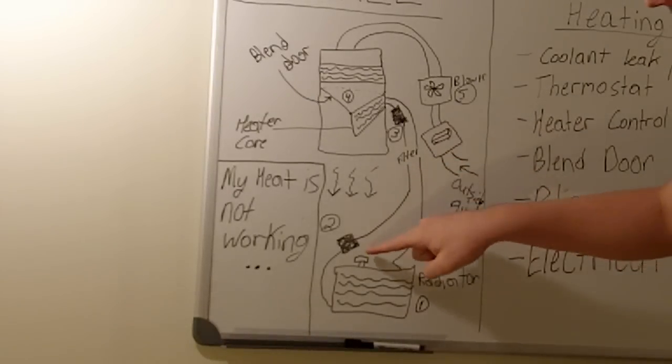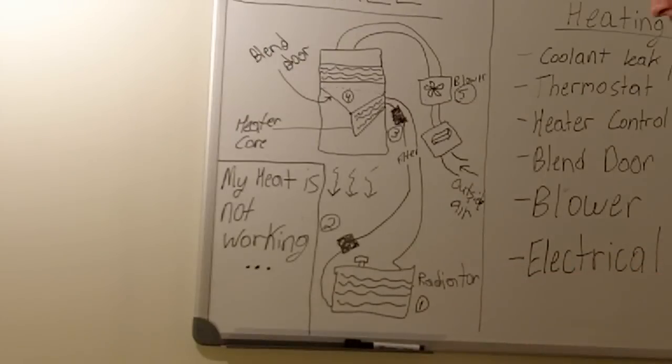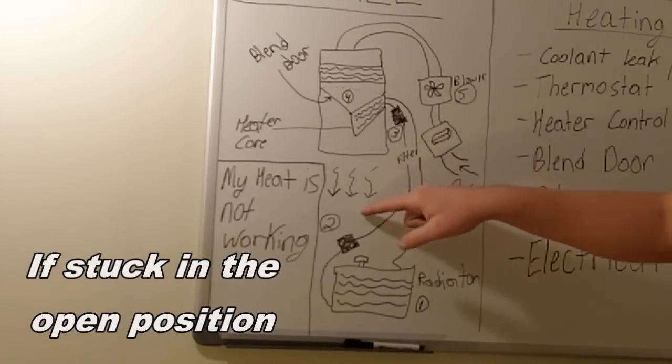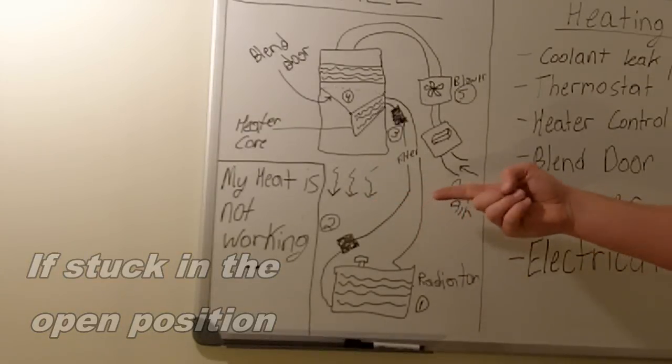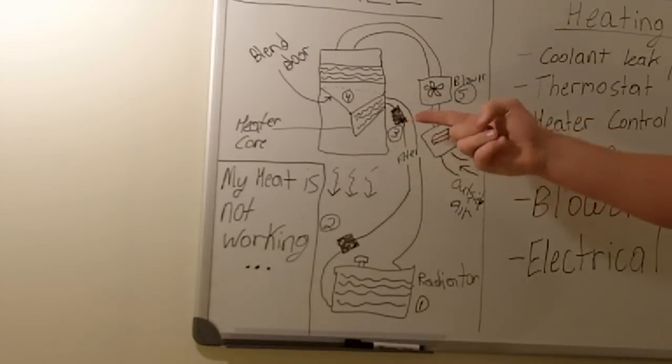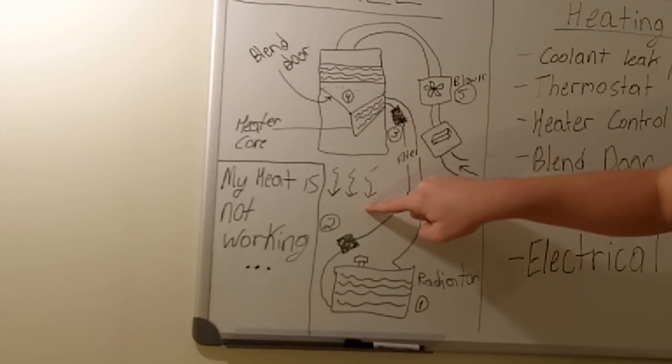And then, oh, one more thing too. This is a little imaginary black box. It's representing your thermostat. A thermostat, a faulty thermostat, can also cause poor heat inside because if the coolant isn't getting heated up or reaching the heater core, no heat in here equals no heat here.